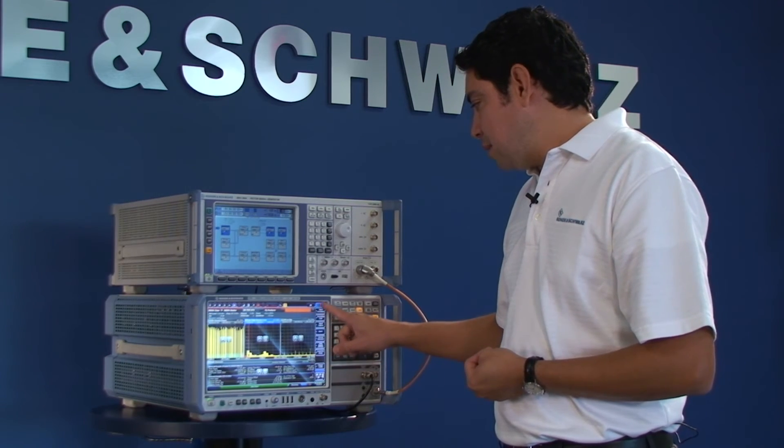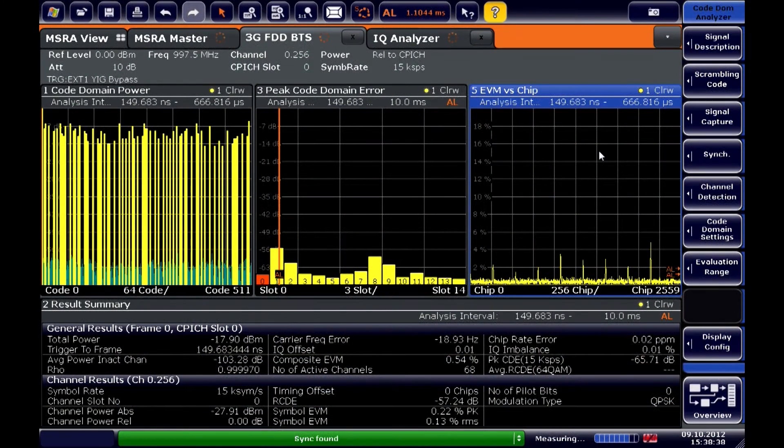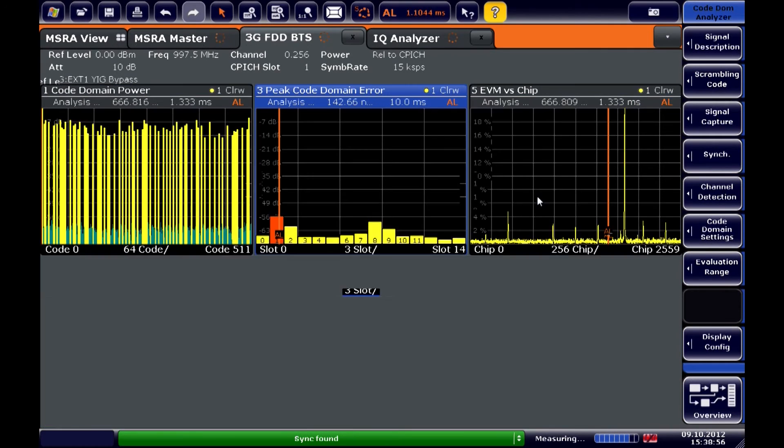What I'm looking at now is my EVM versus chip. Now this EVM versus chip window is only looking at one slot at a time, and I can see that the slot being analyzed is my first slot, not necessarily the area of interest. So I'm going to set my analysis range to my second slot and go back to my EVM versus chip display.